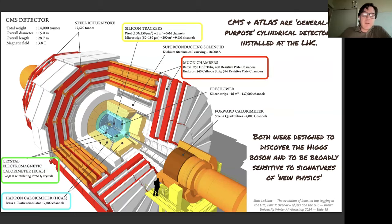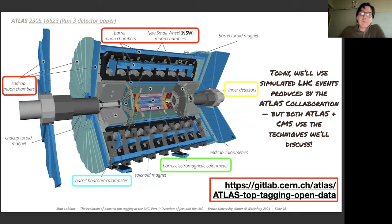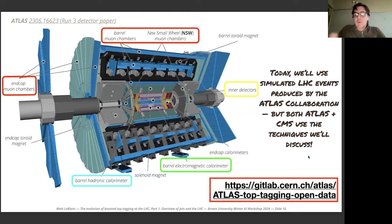Today we'll be using an open dataset produced by ATLAS, consisting of signal and background jets as reconstructed in ATLAS — essentially as though we had real ATLAS data. This dataset is provided by ATLAS for educational use in workshops like this one. CMS and ATLAS differ in their subsystem technologies but perform roughly equivalently for tagging boosted top quarks, and both do an excellent job.